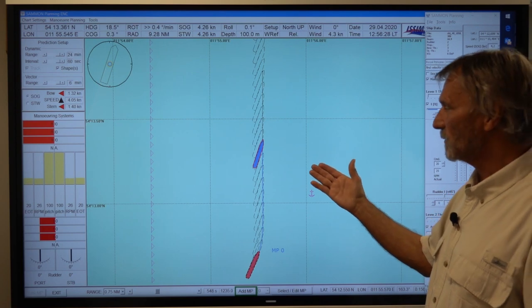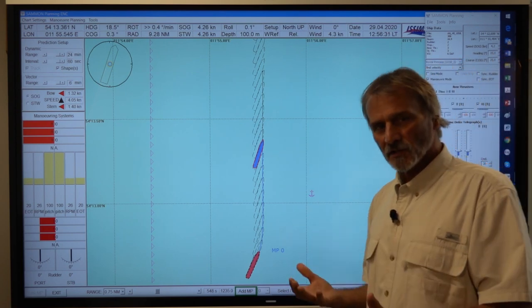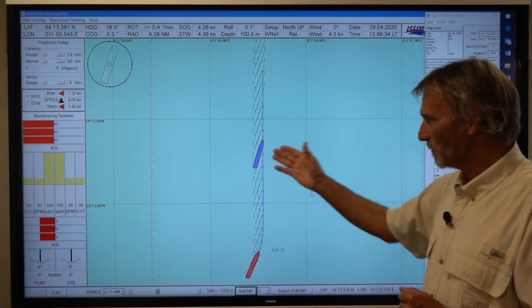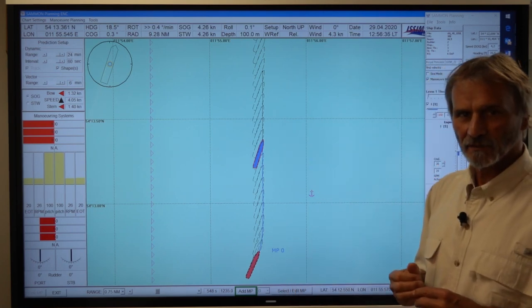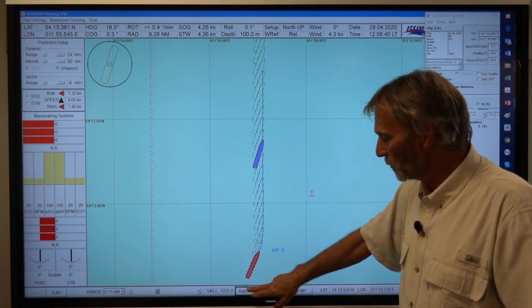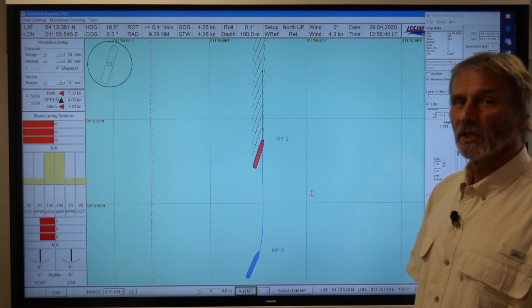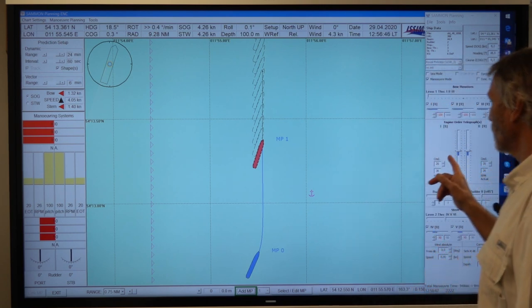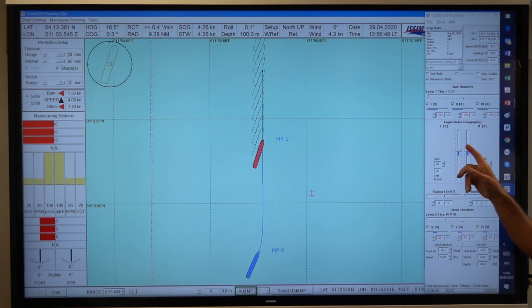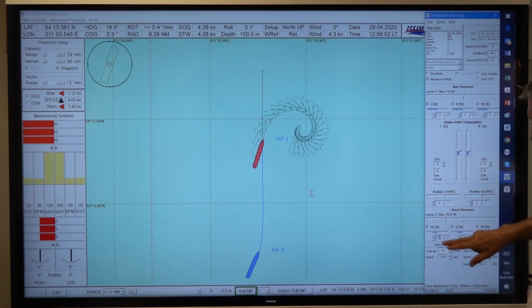So what happens if we at this position release the ship from the burdens of the thruster, what happens to the ship then? For this reason we set a maneuvering point here, so we are now here and we release the thrusters, we set them to zero. Bow thruster zero, stern thruster zero.